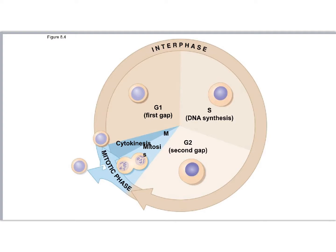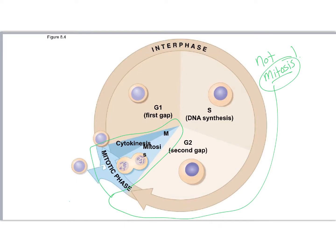So this is the cell cycle — this is not mitosis. Mitosis is actually just this tiny little cake slice right here. That is mitosis — the mitotic phase. But this whole circle is what we call the cell cycle, which is really the life cycle of the cell. Here's how you can think of it: here's the day the cell was born. The original mother cell split into two daughter cells during mitosis, as you can see happening here. After they split, one of the daughter cells is the one we're going to follow.